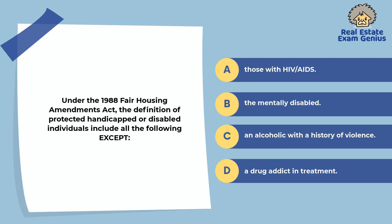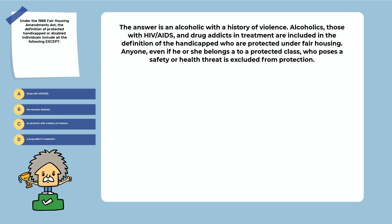Under the 1988 Fair Housing Amendments Act, the definition of protected handicapped or disabled individuals includes all the following except: those with HIV/AIDS, the mentally disabled, an alcoholic with a history of violence, or a drug addict in treatment. The answer is an alcoholic with a history of violence. Alcoholics, those with HIV/AIDS, and drug addicts in treatment are included in the definition of the handicapped protected under fair housing. Anyone who poses a safety or health threat is excluded from protection.